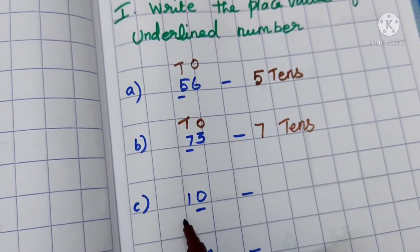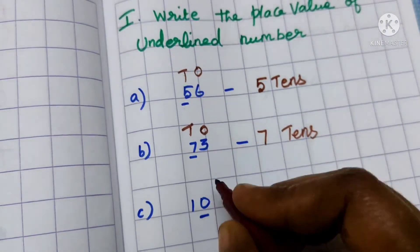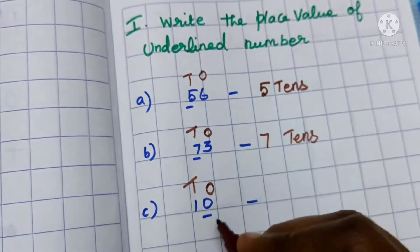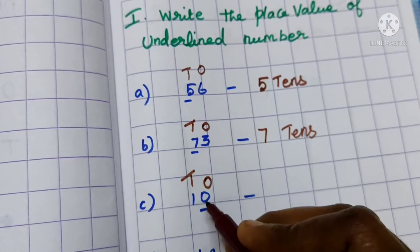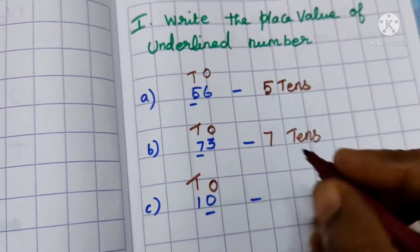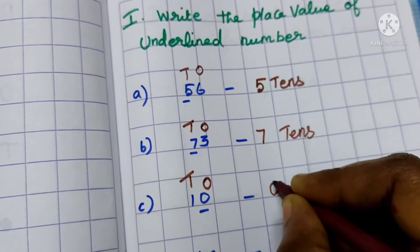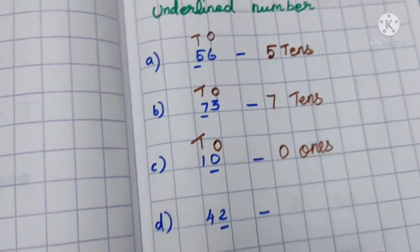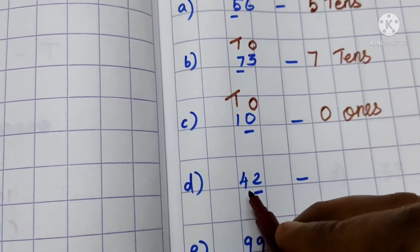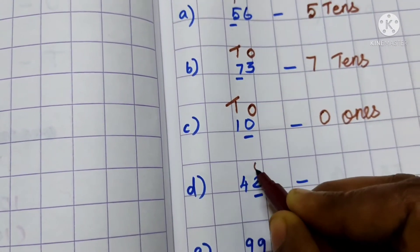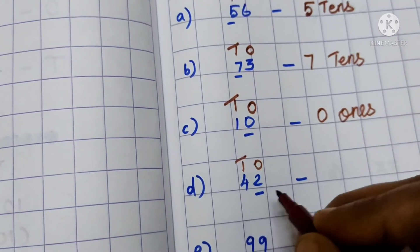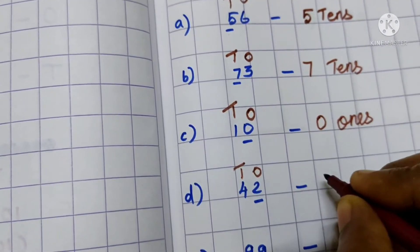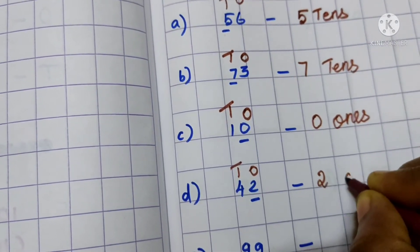The third one is 10. Put the place value and check. The place value is 0 — it is in the 1's place. And then we have the answer: 2. The place value of 2 is 1's. So, 2 ones.